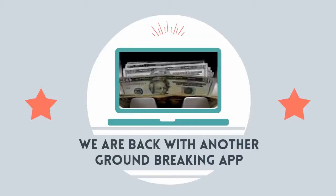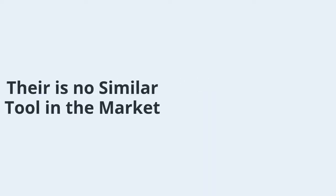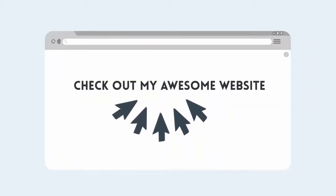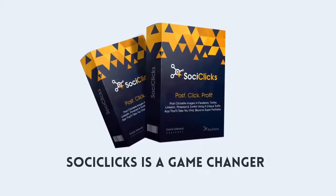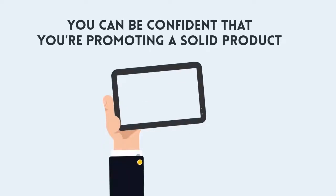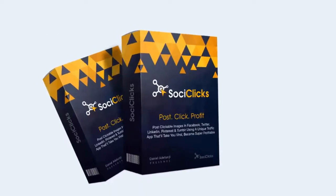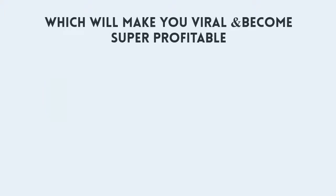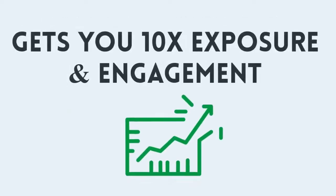Listen, this is no hype. There's no tool like this available in the market. There are social automation apps and a few that borrow this idea, but none is as close or can help you drive traffic to your links, which will in turn drive huge targeted traffic to your websites. SociClicks is a game changer we've been working on for the past three months. SociClicks is a revolutionary platform that allows you to post clickable images in five social networks: Facebook, Twitter, LinkedIn, Pinterest, and Tumblr, which will take you viral, make you super profitable, and get you 10 times exposure and engagement.